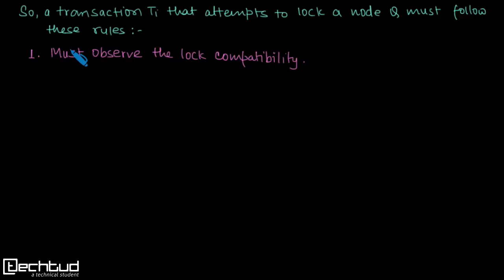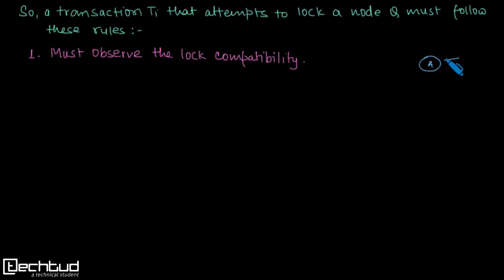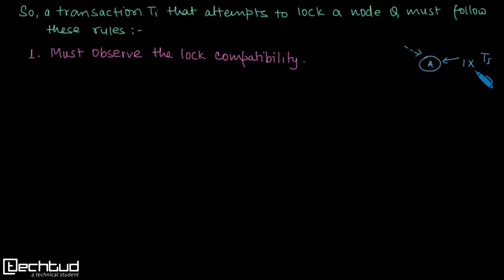We have certain rules here. When transaction ti attempts to lock a node q, it must follow these rules. The first rule is that it should observe the lock compatibility. For example, if node a is already locked by some transaction tj with intention exclusive mode, and transaction ti requests an intention exclusive lock, since intention exclusive and intention exclusive are compatible, the lock can be granted.